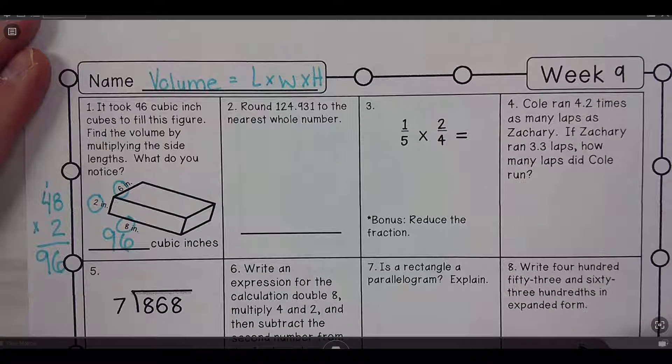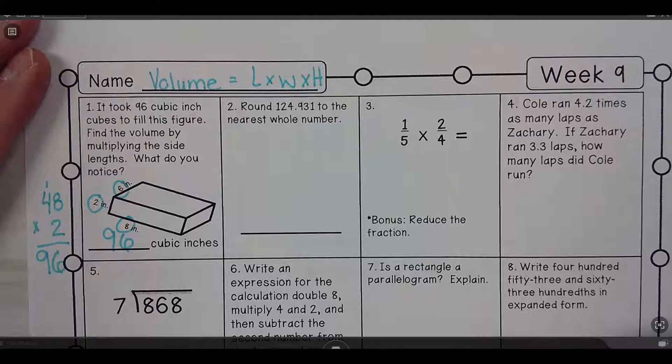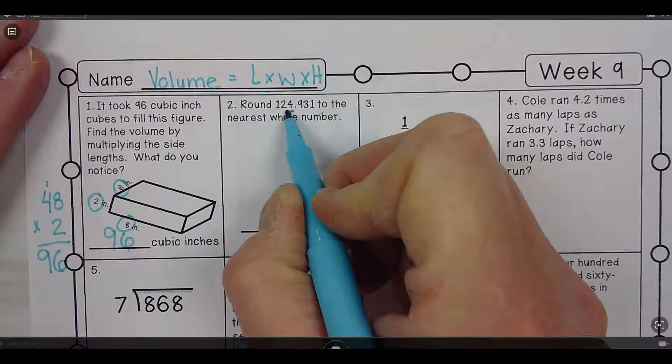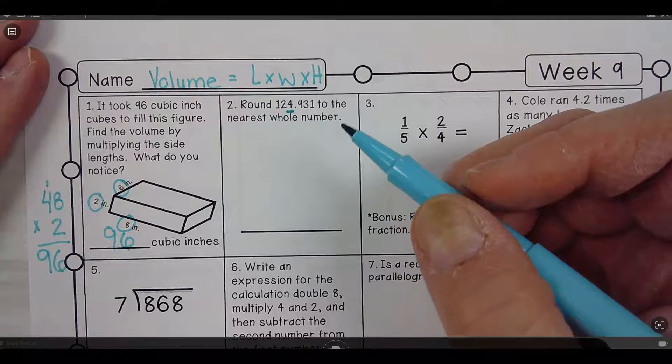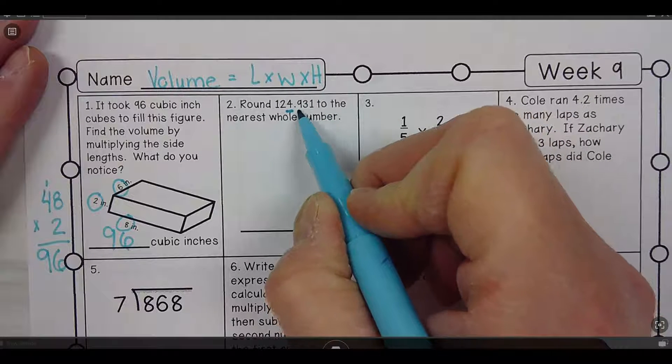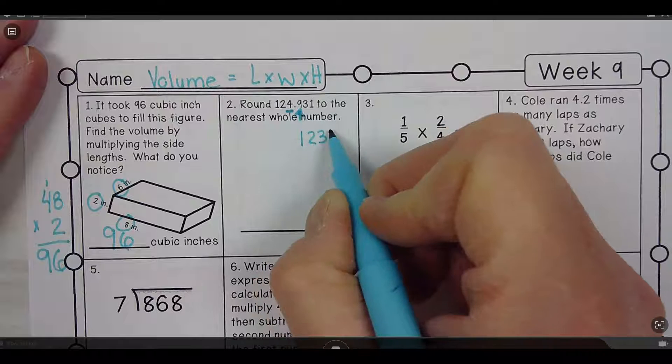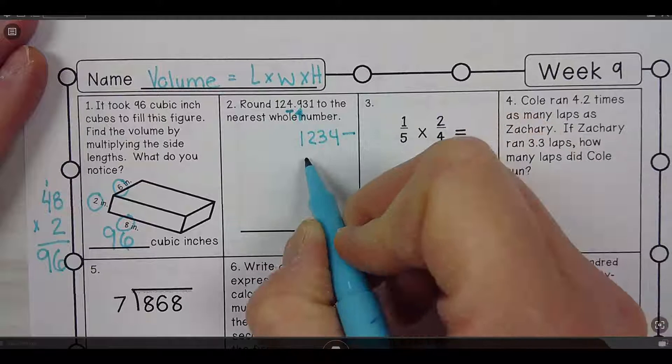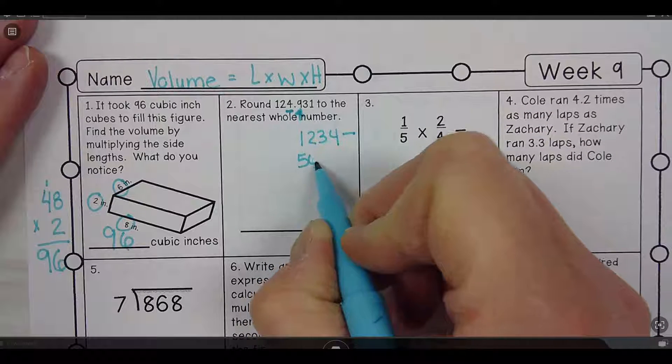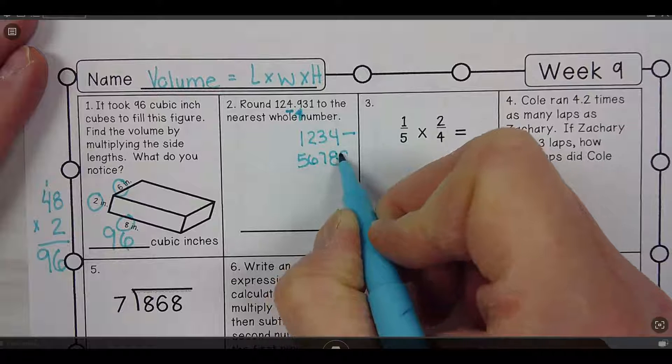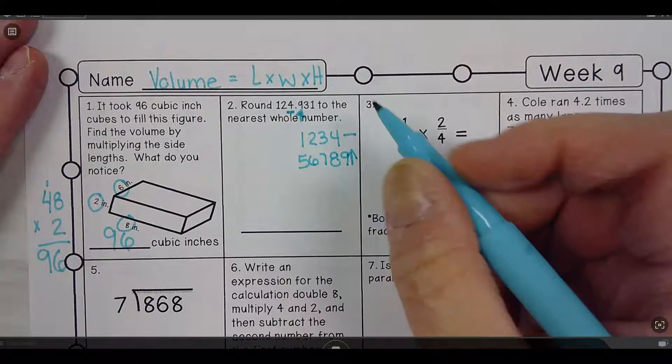Number 2: Round 124.931 to the nearest whole number. Well, if I'm rounding to the nearest whole number, it's either gonna be 124 or 125. My rule is if it's 1, 2, 3, or 4 it stays the same. 5, 6, 7, 8, or 9 it'll bump it up. So because it's a 9, it's gonna bump the 4 up, so it's gonna be 125.